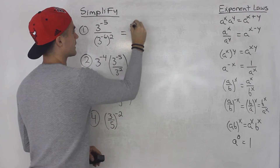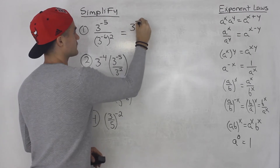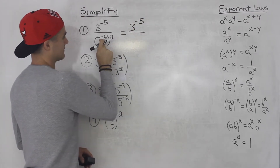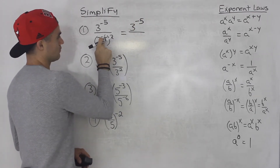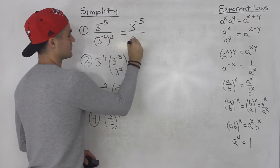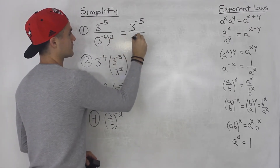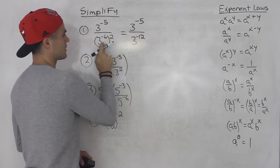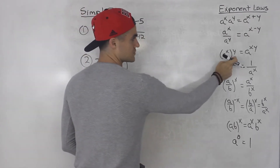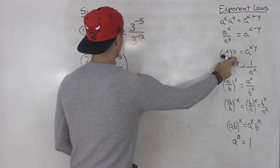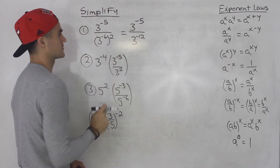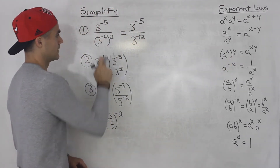We have 3 to the negative 5 over 3 to the negative 6, squared. The 3 to the negative 5 can't be simplified. For the denominator, negative 6 times 2 gives us negative 12 — we use the exponent law to multiply those exponents.